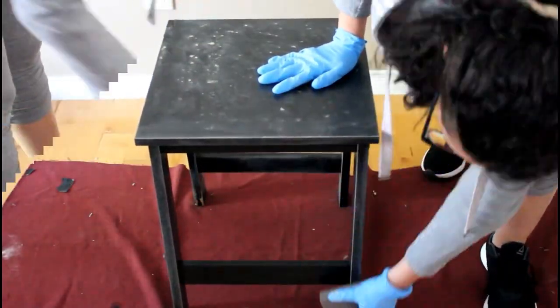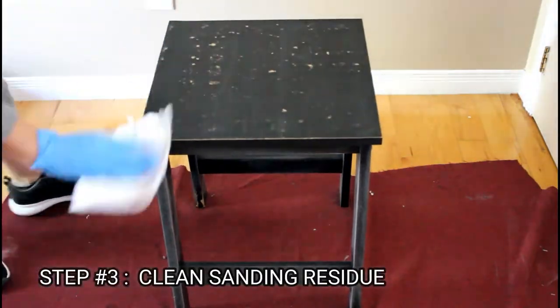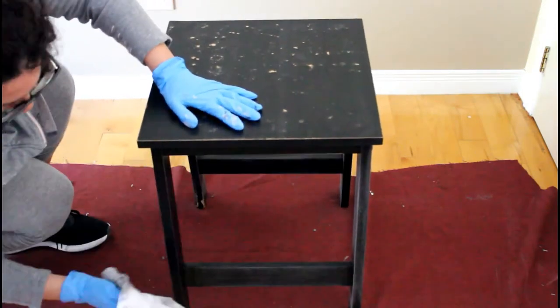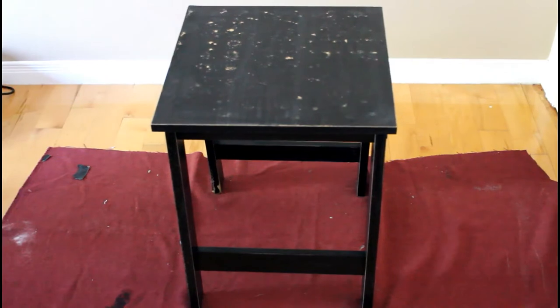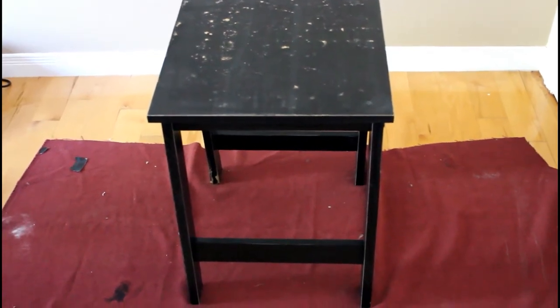Now that we're done sanding we'll clean up the dusty residue with soap and water and once we're ready we'll head outdoors to start spray painting the base.